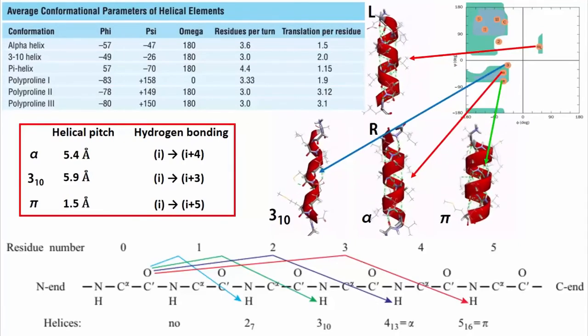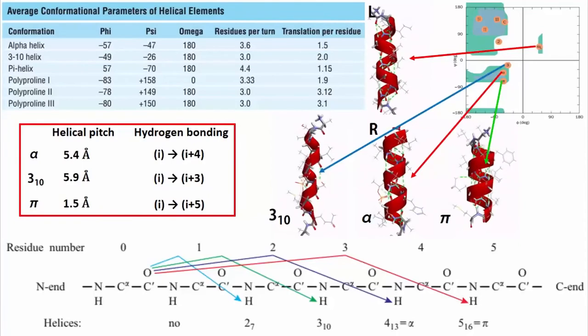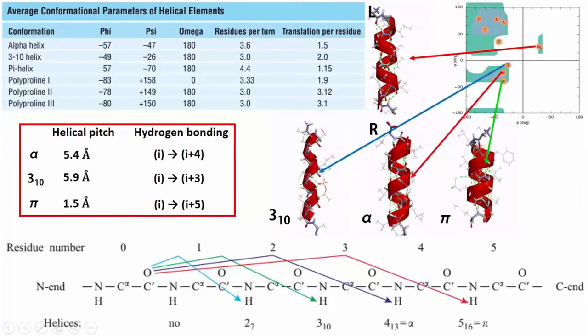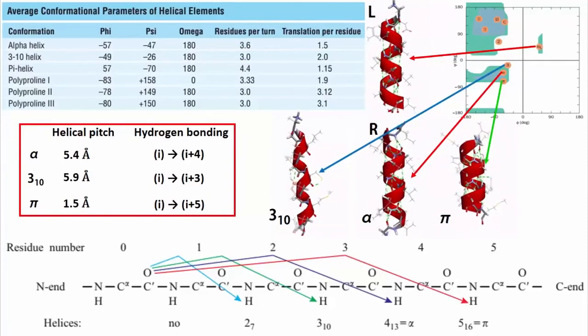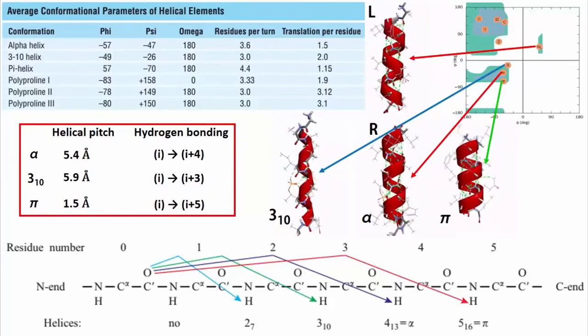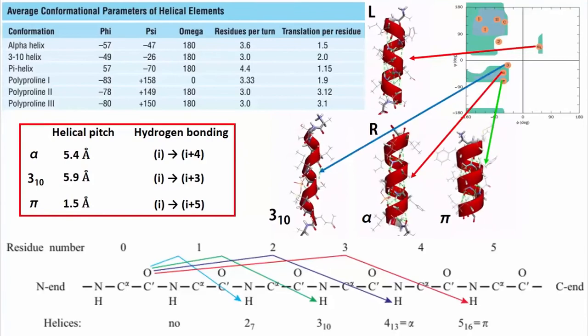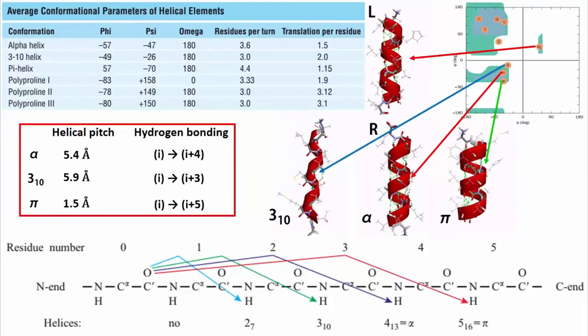Hydrogen bonds have a specific distance criterion. So, you can easily understand that if the same number of amino acids make up alpha, 310 and pi helix, the pi helix has to be the shortest, the 310 helix has to be the longest and alpha helix will be intermediate.